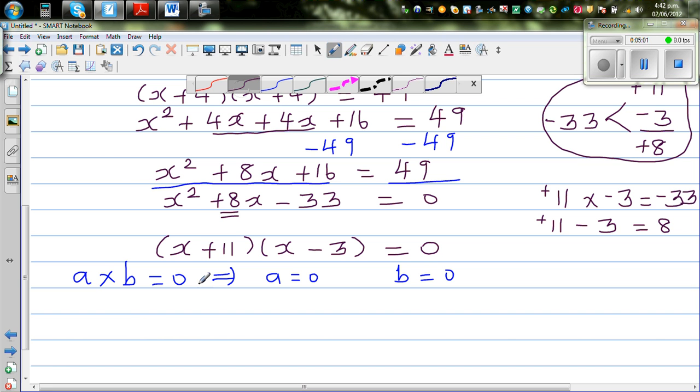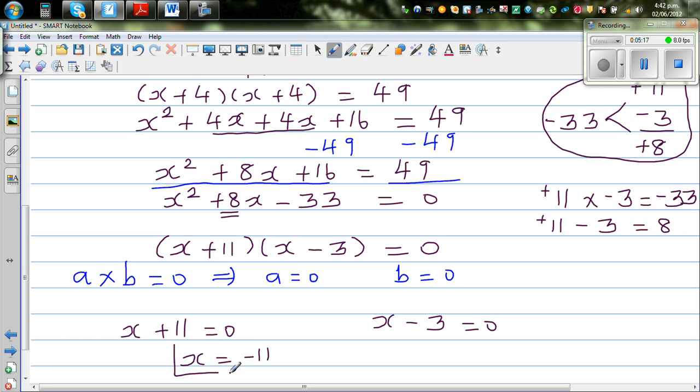I can say x plus 11 should be 0, or x minus 3 has to be 0. And so x has to be, if x plus 11 is 0, x has to be negative 11. And this x is equal to 3.